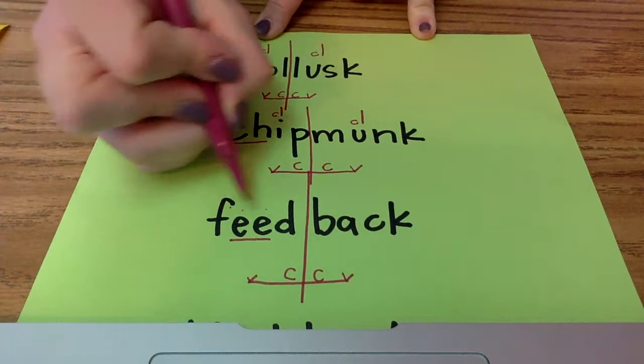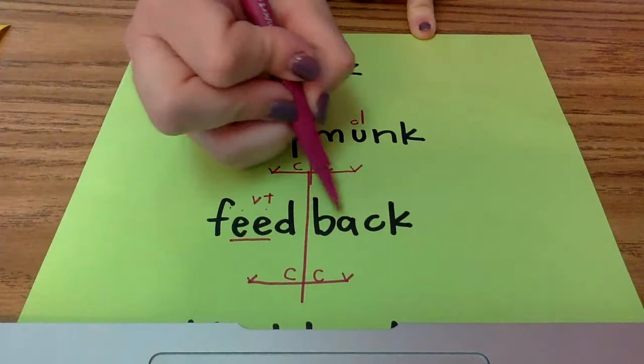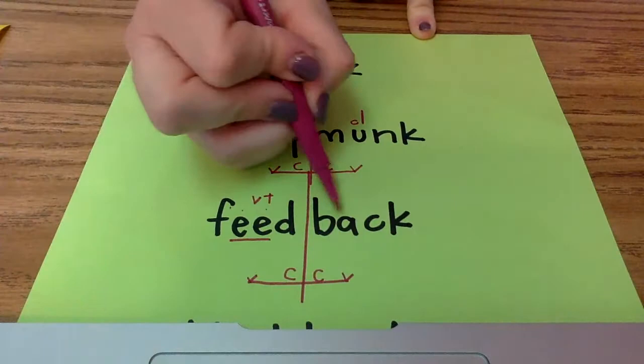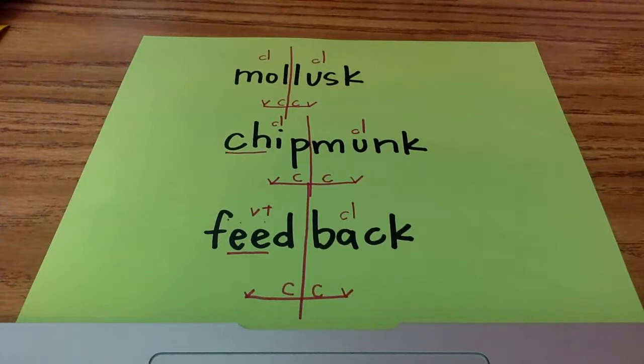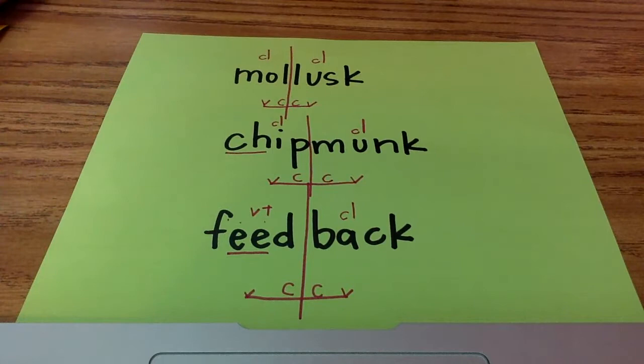And this is actually a compound word. All right. So, even though this is closed, that's a vowel team, makes it long. And this is closed. F-E-E-D, B-A-C-K. Feedback. So, if you did something and let's say you cleaned your room, your mom may give you feedback. Hey, you did this great. Next time, let's work on this.